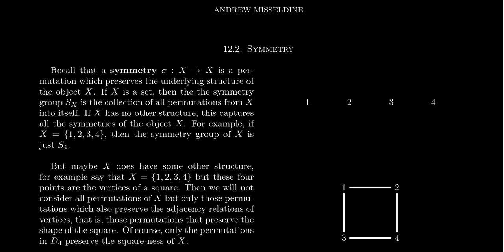So our symmetry here, we have some map sigma which goes from a set X to a set X. It's a permutation, but why do we have a different word if we already have permutation? The idea is a symmetry is going to be a permutation that preserves the underlying structure of the object X.